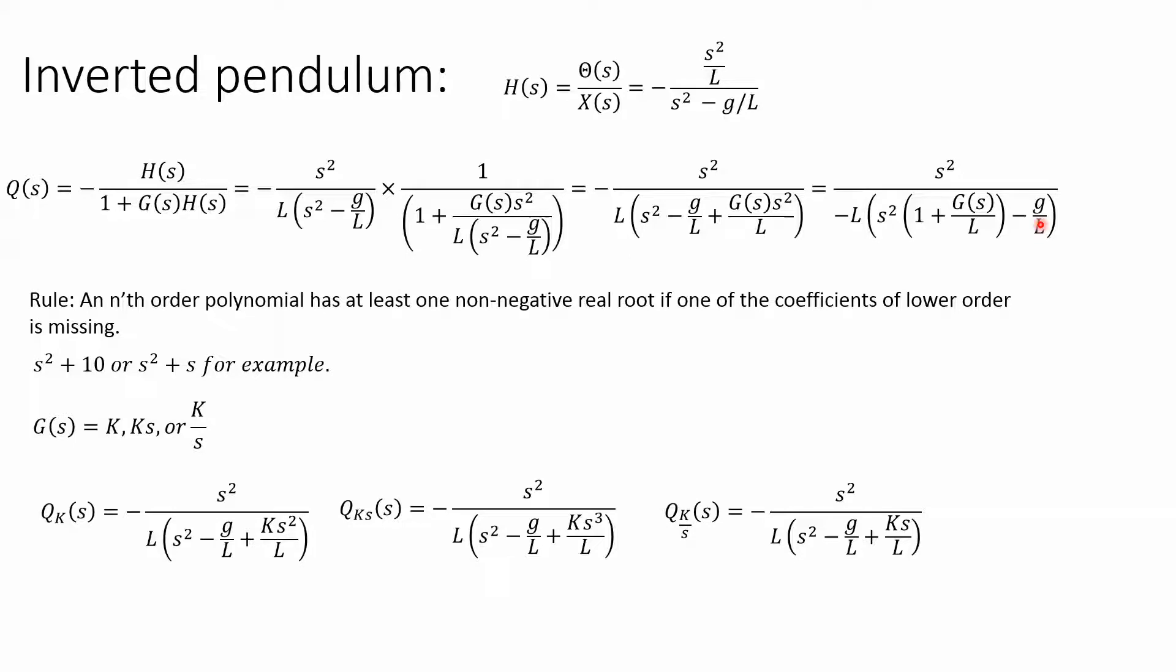Now, there is a rule to help us: any nth order polynomial has at least one non-negative real root if one of the coefficients of a lower order is missing. So for a second order, if I have s² + 10, the s term is missing, so it'll be unstable.